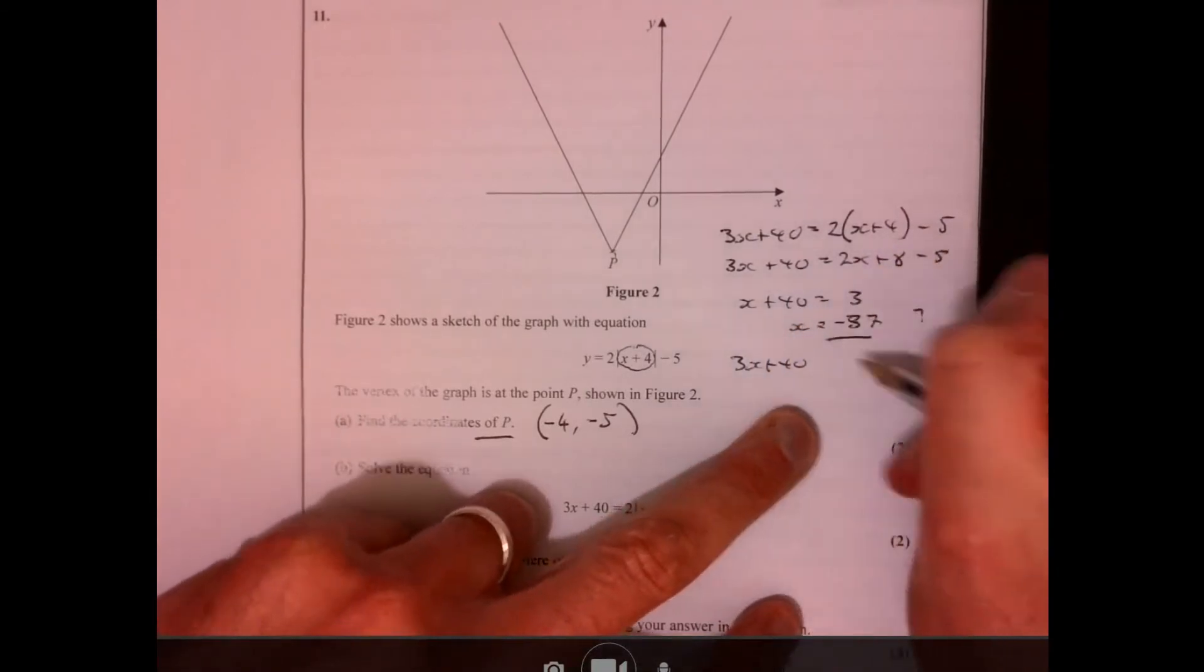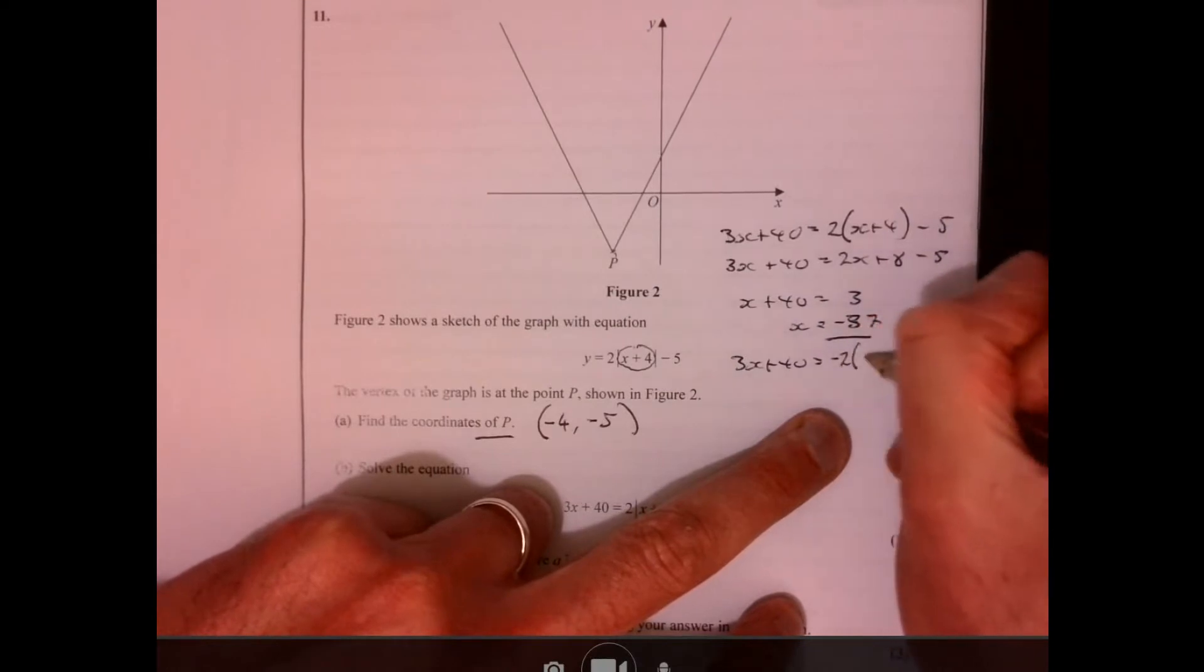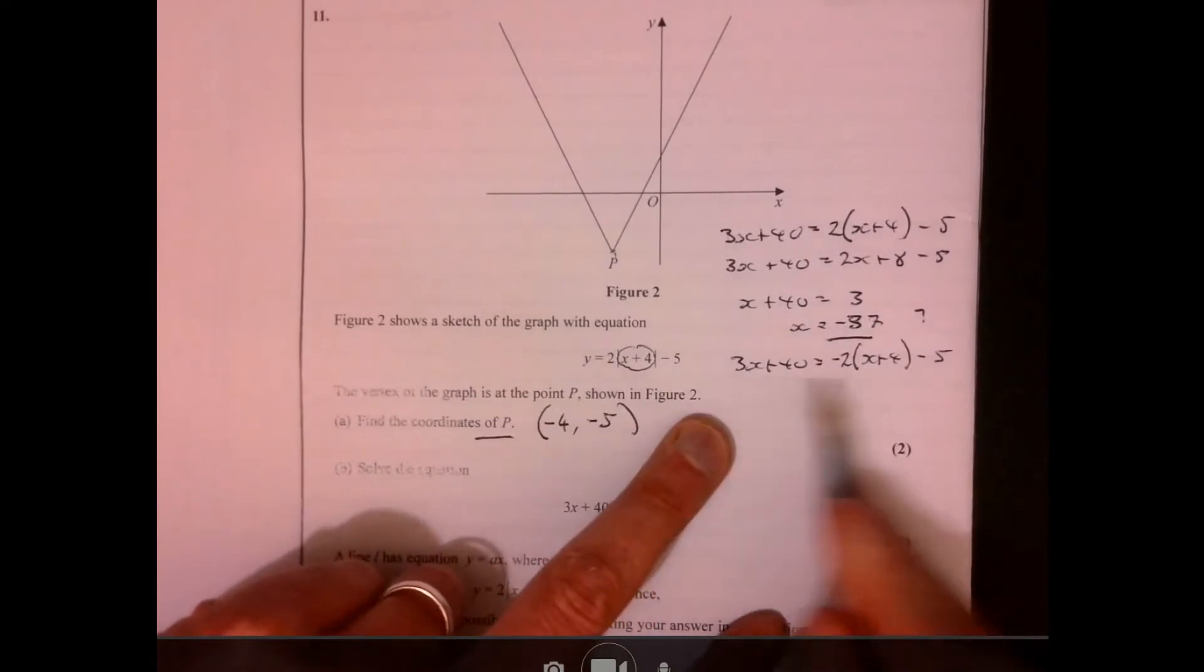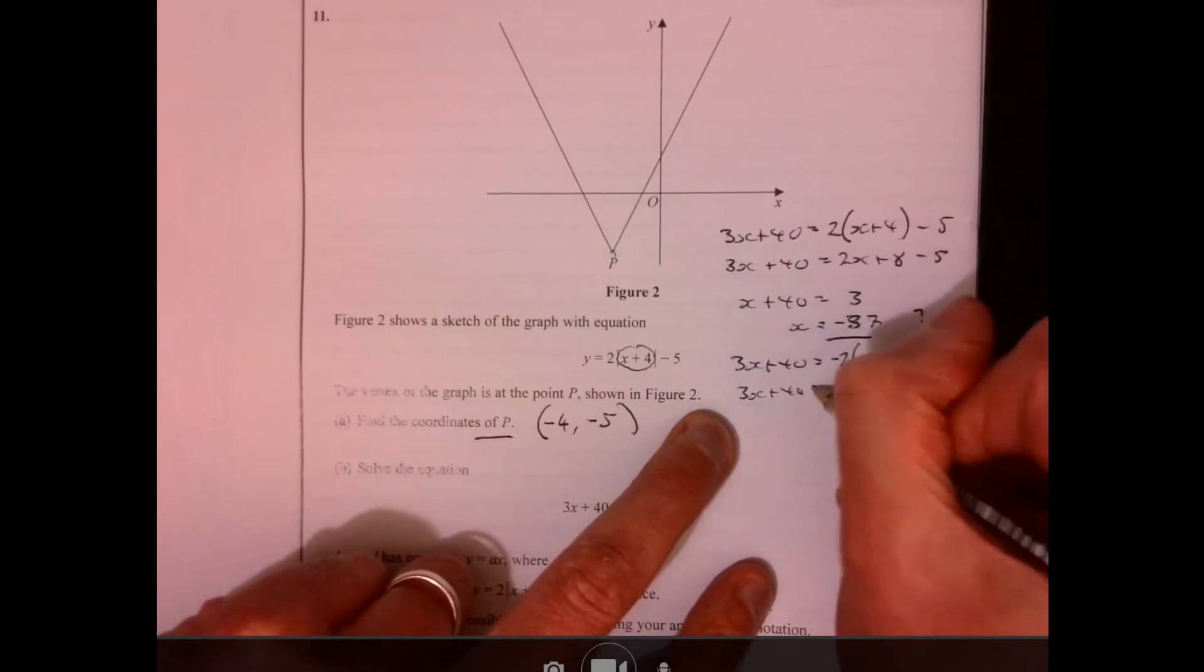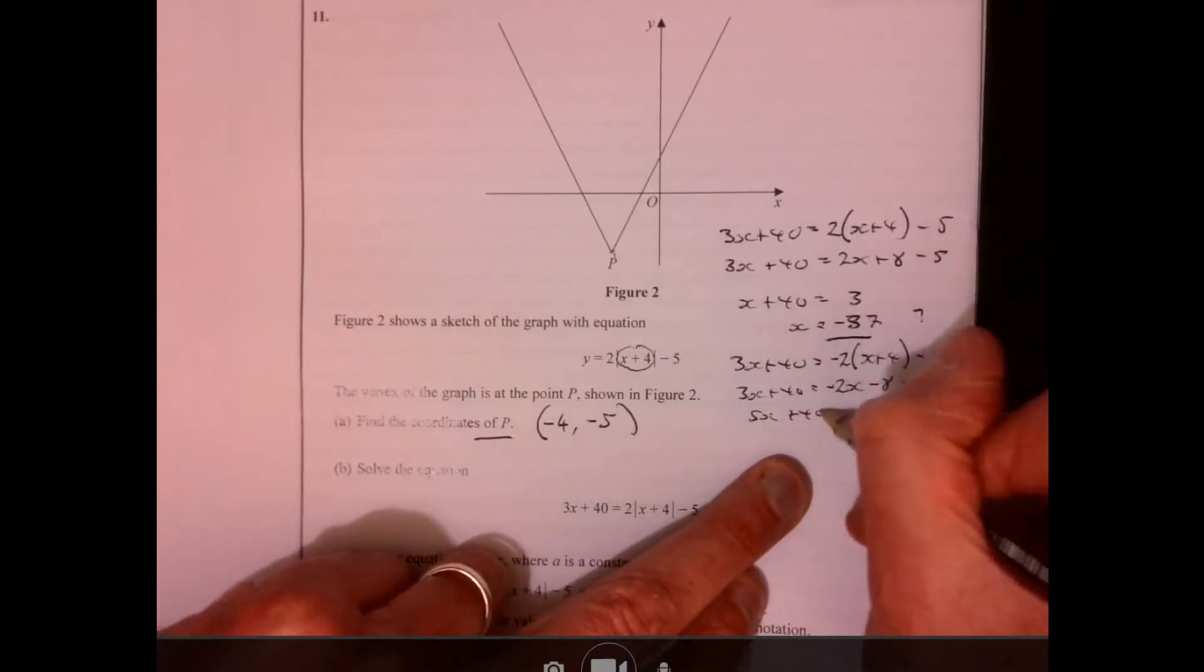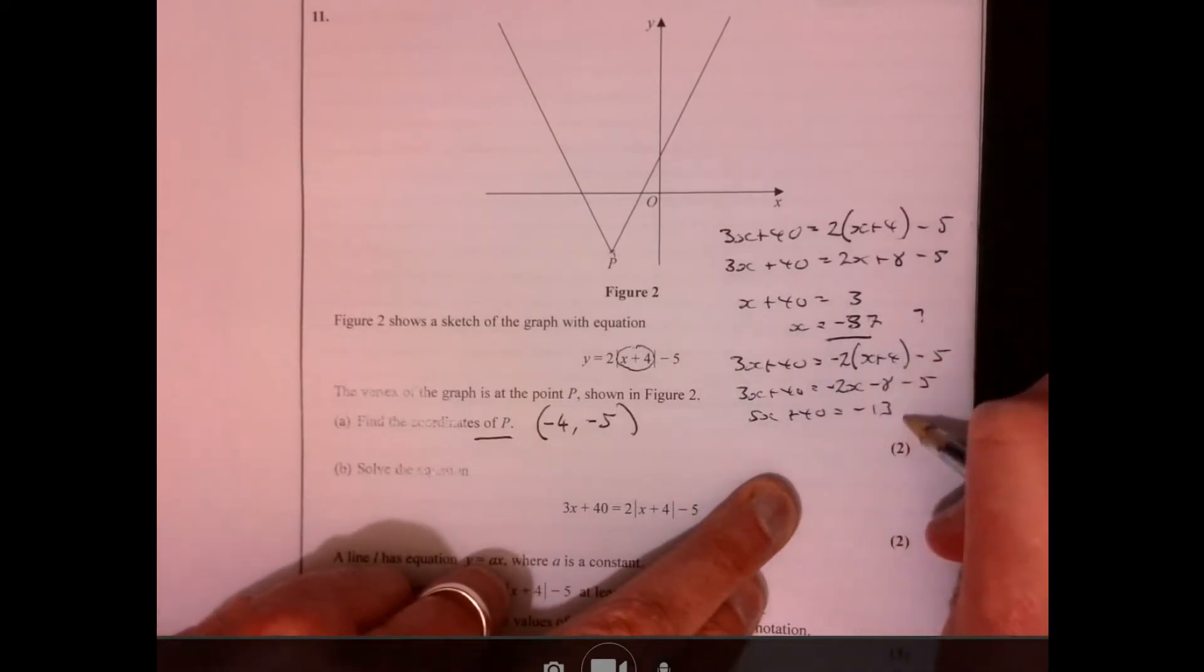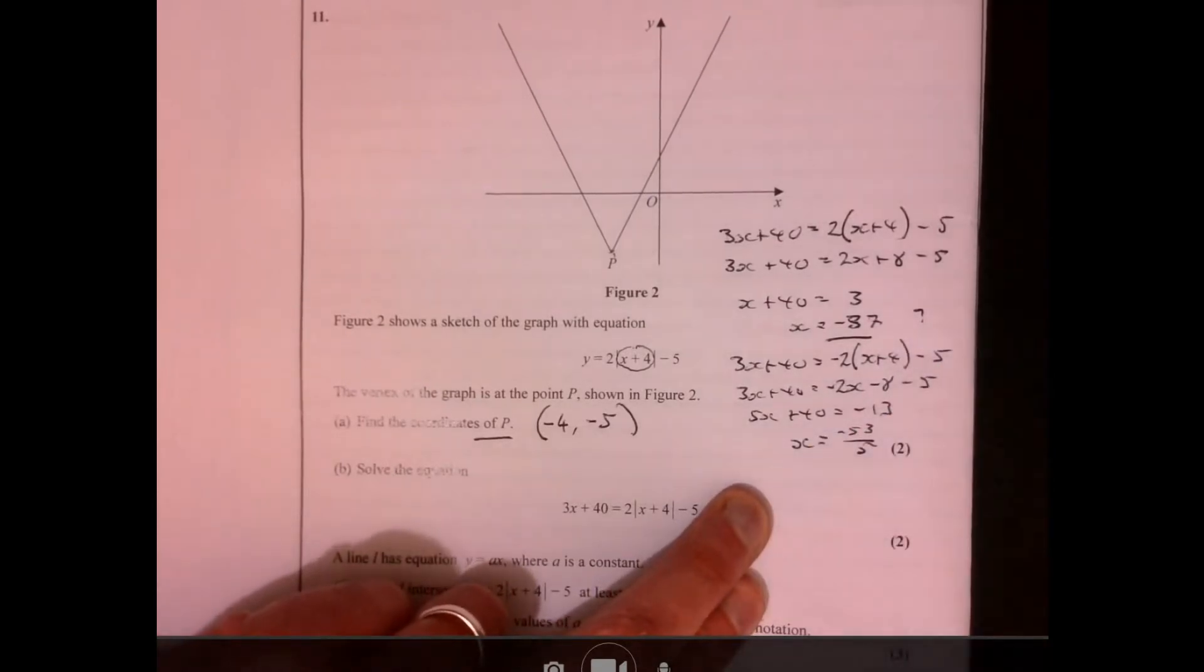So imagine that this is a minus. So 3x plus 40 equals, so the outcome of this being a minus, I can have minus 2 because that's the other possible to consider. So if we now solve this, 3x plus 40 equals minus 2x minus 8 minus 5. Add 2x to both sides, 5x plus 40 equals minus 13. So minus the 40, so x would equal minus 53 over 5.